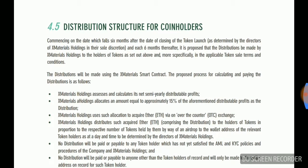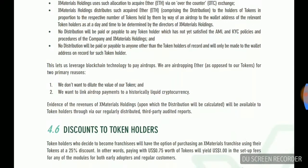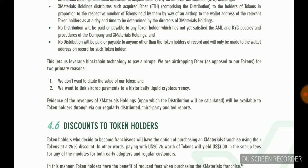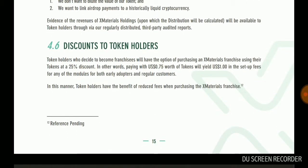So far, fine token holders: distribution is made on the date which falls six months after the date of closing of the token sale, as determined by the directors of X material holding. Each six months after, a distribution will be made by X material holding to the holders of tokens as set out in the applicable token sales conditions. Distribution is made using X material's smart contract. We do not dilute the value of our token, and we want to link the drop payment to the critical liquidity properties, distributed to the token holders. We want to confirm what the token value is.